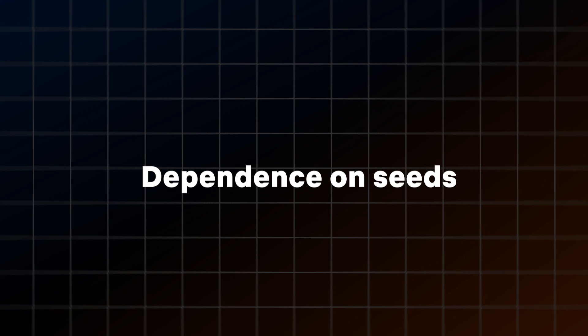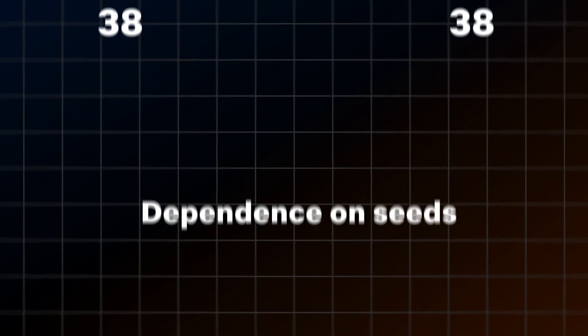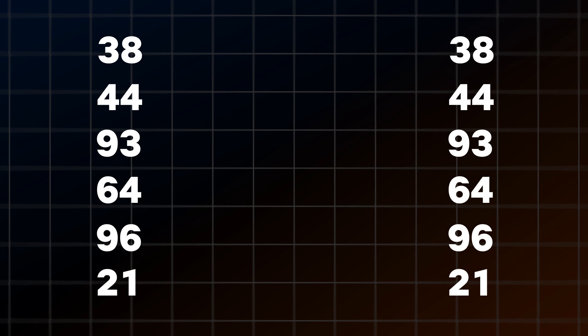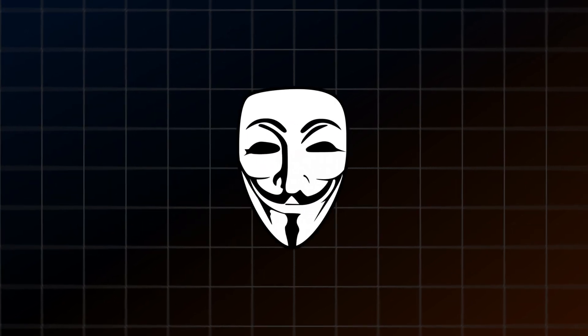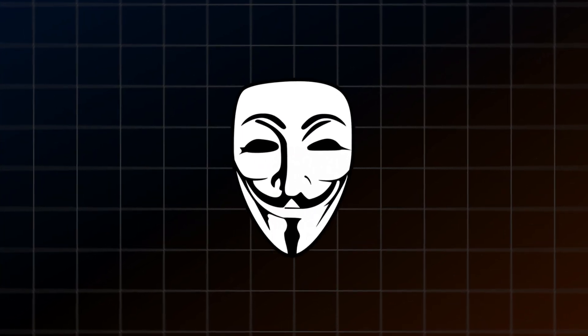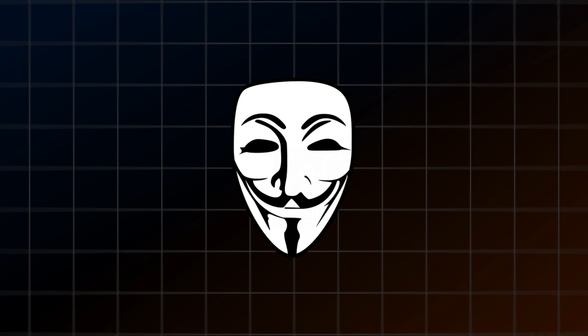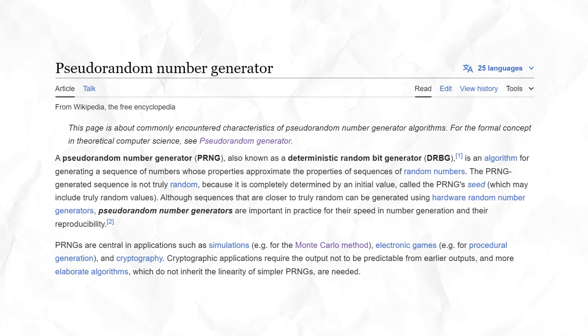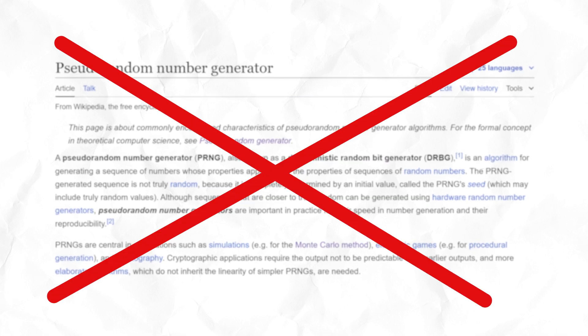The middle square method seemed pretty good, but it actually has a few problems. The resulting number always depends on the original seed — same seed, same sequence. So if someone wanted to hack our generator, it would be pretty easy. All they have to do is find out the original seed, and that's it.